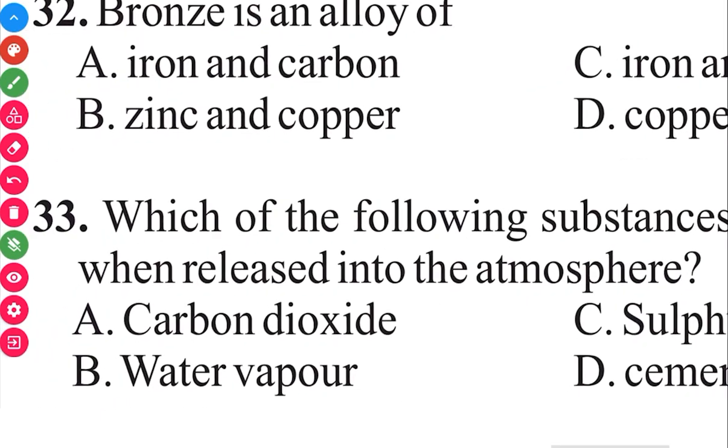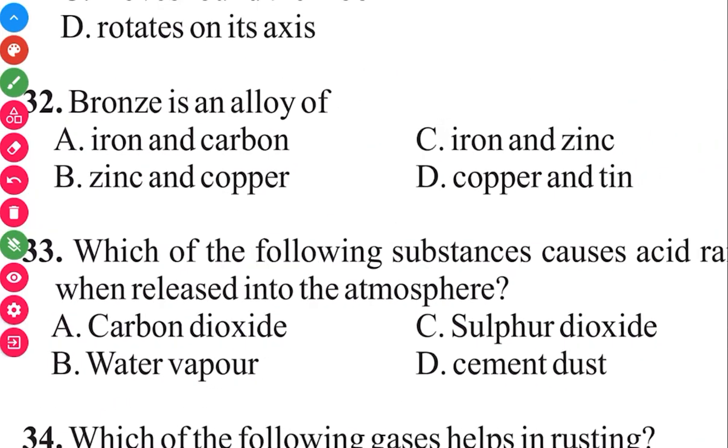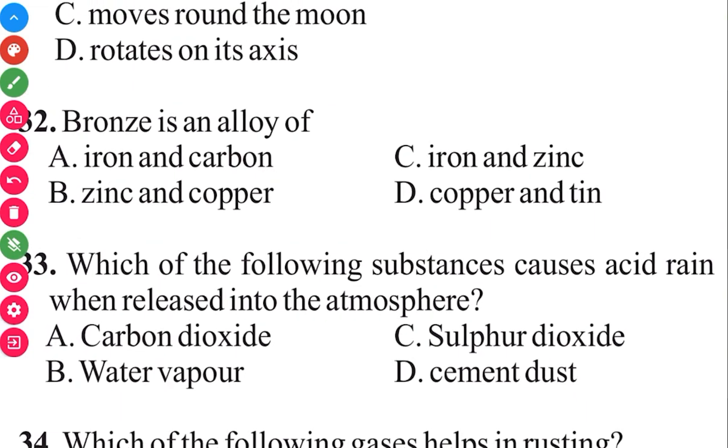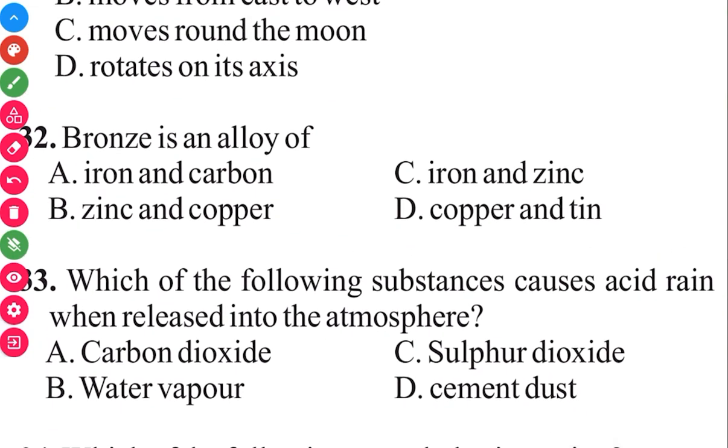Which of the following substances causes acid rain when released into the atmosphere? The answer in 3, 2, 1 is C, sulfur dioxide.